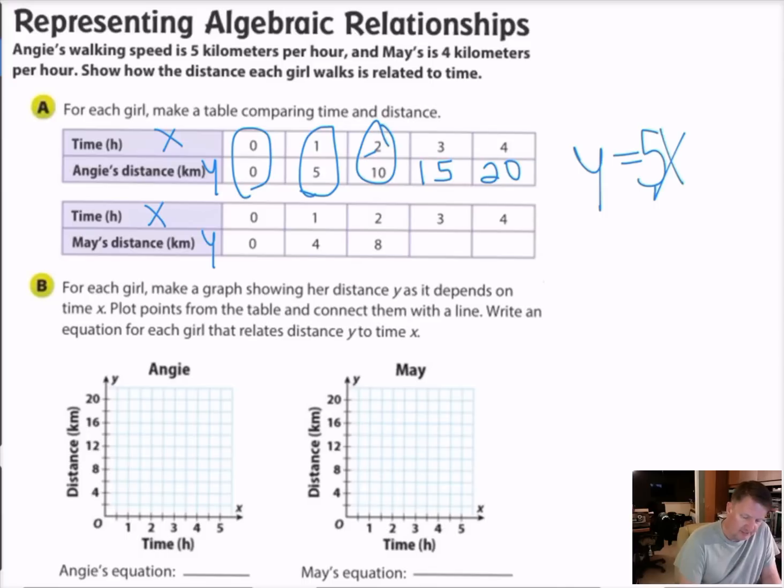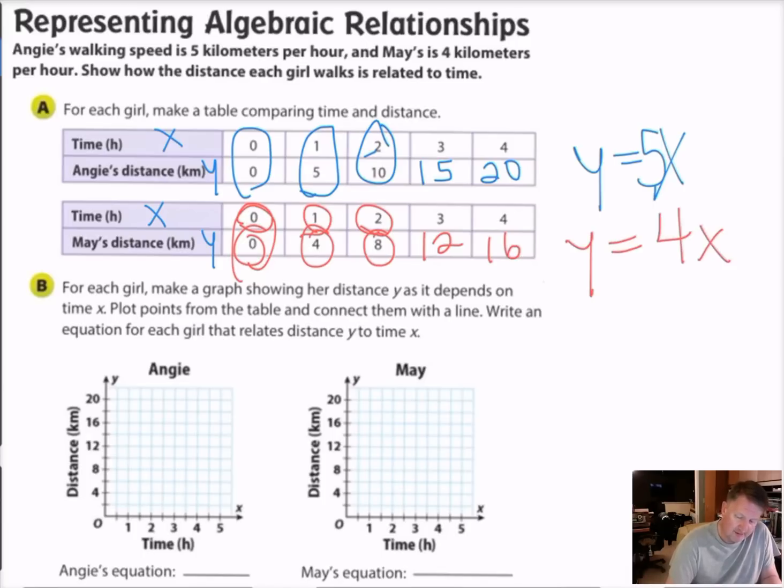Let's talk about May real quick. Same thing here. She's got a 0 to 0 relationship. So that means I'm going to multiply. If my time is 0, my distance is 0. If my time is 1, my distance is 4. If my time is 2, my distance is 8. It looks like I'm multiplying by 4. So that means when I say my time is 3, my distance is going to be 12. When my time is 4, my distance is going to be 16. So that tells me that Y equals 4 times whatever value X is.